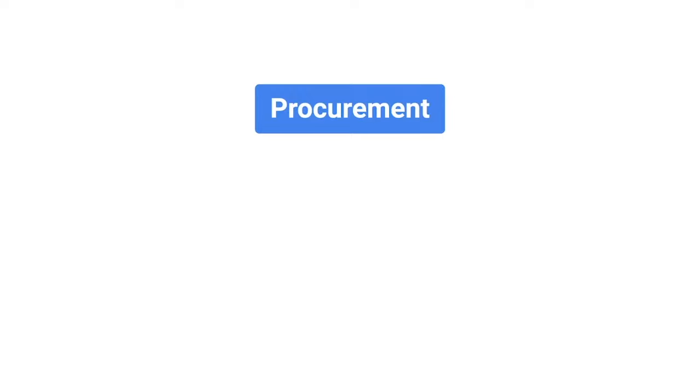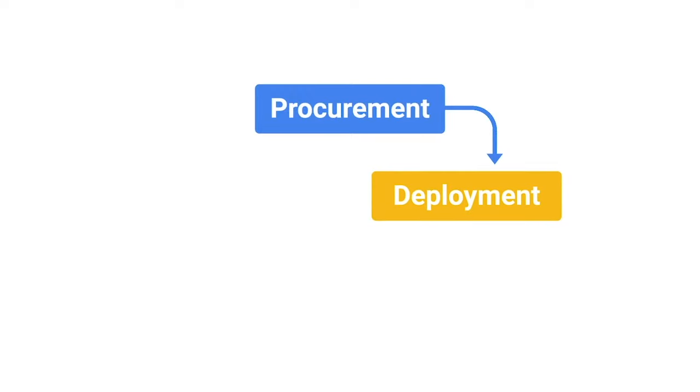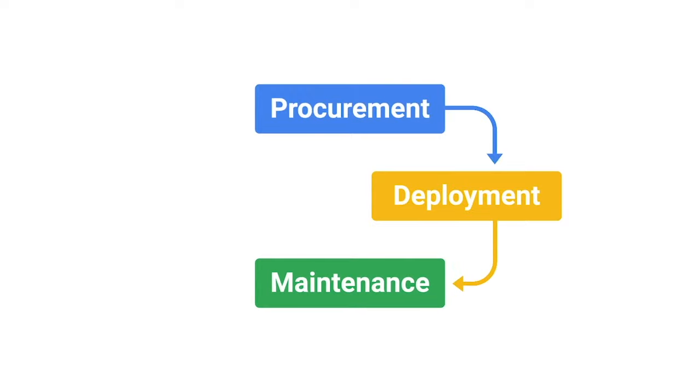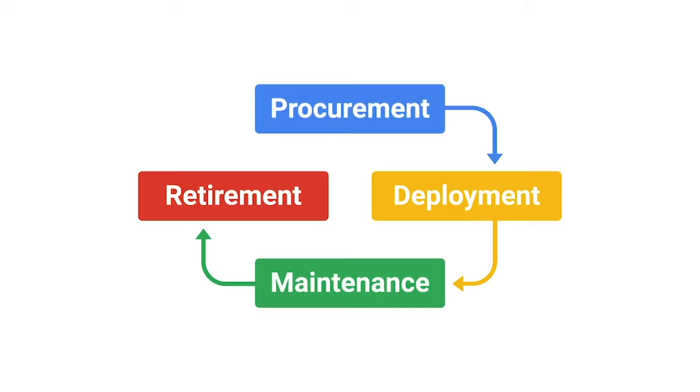Not only do sysadmins have to standardize settings, they also have to figure out the hardware lifecycle of a machine: when was it built, when was it first used, did the organization buy it new or used, who maintained it, how many users have used it, and what happens when someone needs a new one. There are four main stages of the hardware lifecycle: Procurement — hardware is purchased or reused; Deployment — hardware is set up so employees can do their job; Maintenance — software is updated and hardware issues are fixed; and Retirement — hardware becomes unusable and is removed from the fleet.